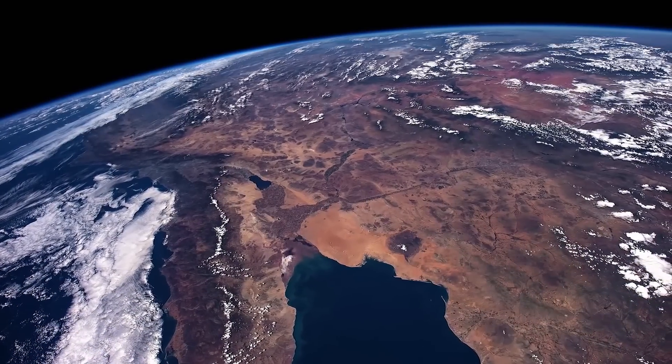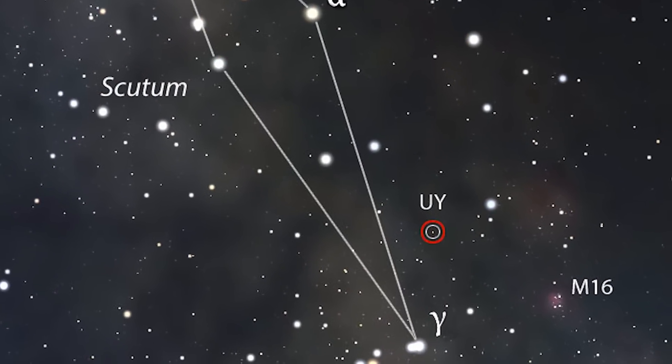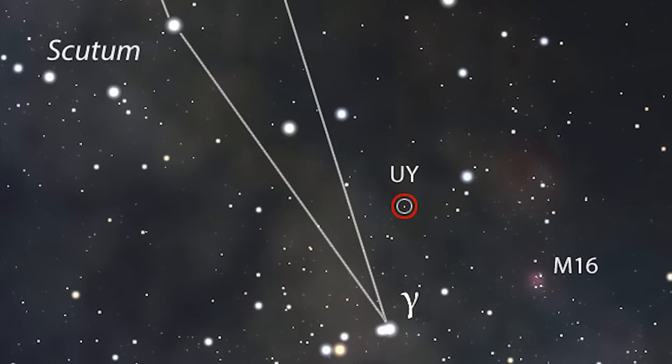People on Earth see UY Scuti this way. Not so impressive, is it? The biggest star in the universe shines in our skies no brighter than Proxima Centauri, a red dwarf.